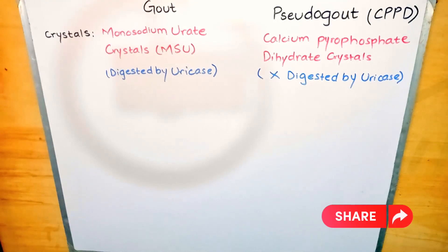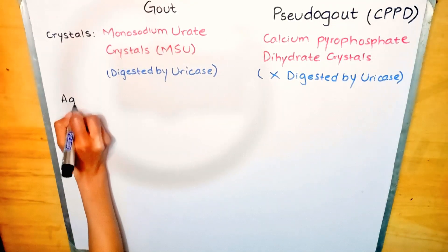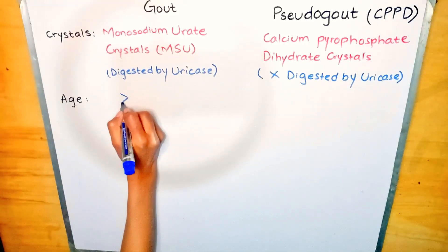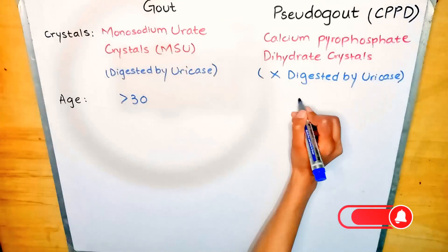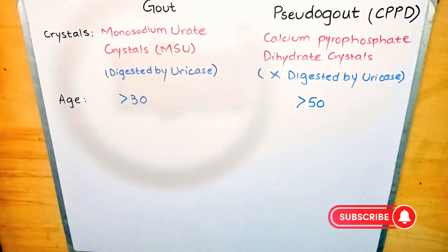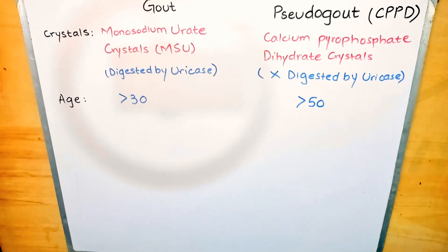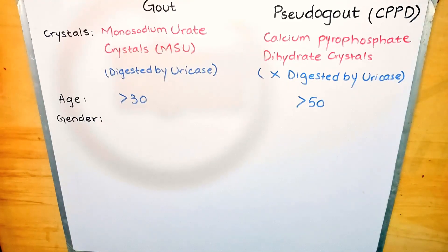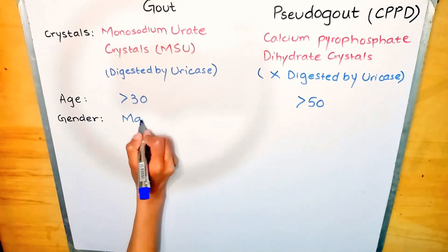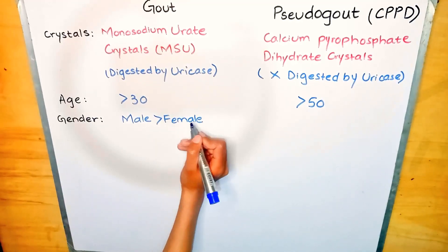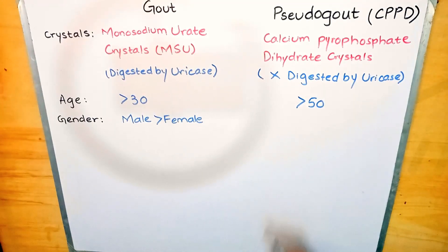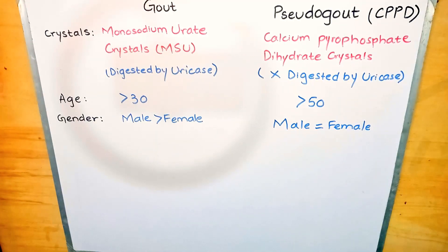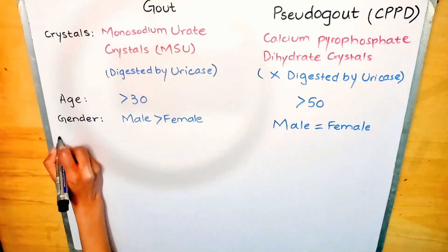In terms of age of onset, gout crystals appear in people after age 30, while pseudo gout occurs after age 50. If it occurs in young patients, it would be observed in a hereditary form and could be associated with other disorders. Gout affects males more than females, and females rarely develop gout after menopause, while pseudo gout equally affects males and females.